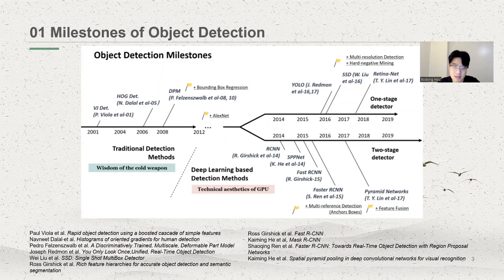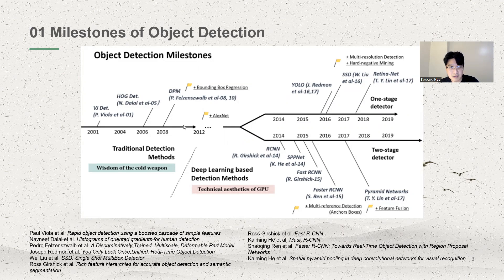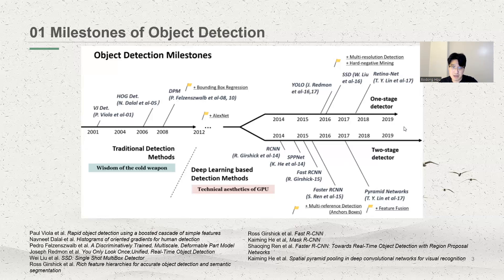The development of object detection over the past two decades can be seen as a microcosm of the field of computer vision. As you can see from the picture, 2012 was an important year. Object detection before this witnessed the wisdom of the earlier era, but that's not the point of my talk. I will focus on more recent state-of-the-art detection methods.